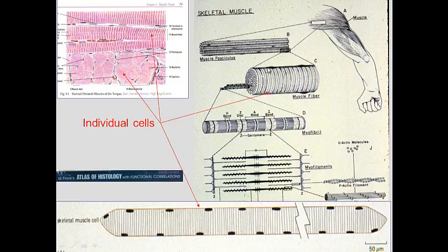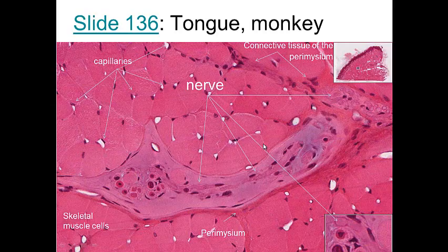The muscle fiber has a plasma membrane with nuclei on the periphery, and inside the cell are myofibrils. Looking at the myofibrils, you can see dark areas and light areas, and even a darker structure — the Z-disc. The sarcomere goes from one Z-disc to another. You can see myosin (thick filaments) and actin (smaller filaments), and it is the location of these relative to one another that makes the sarcomere contract.